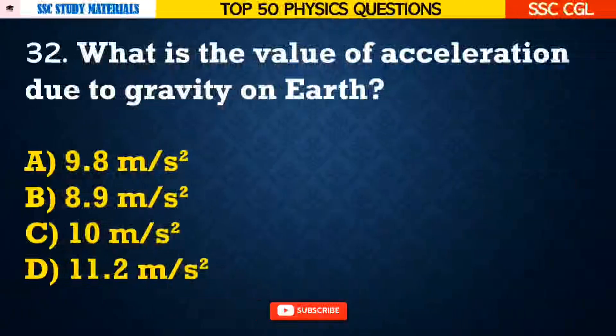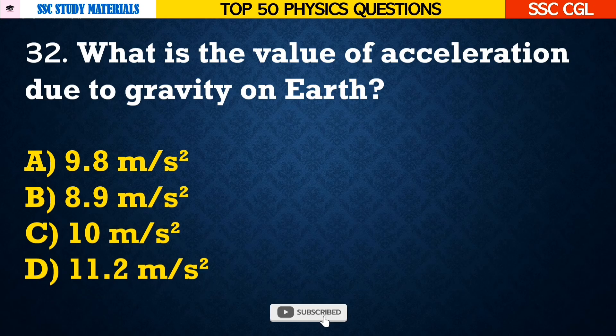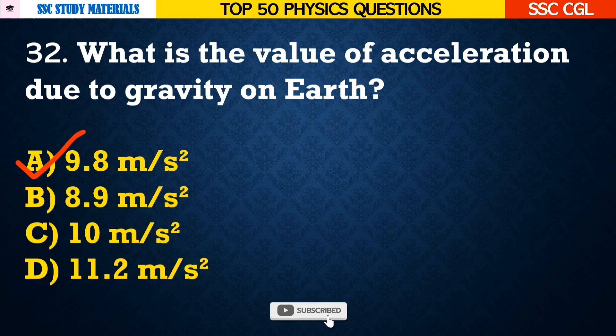Question number 32: What is the value of acceleration due to gravity on earth? — Answer A. 9.8 meters per second squared.